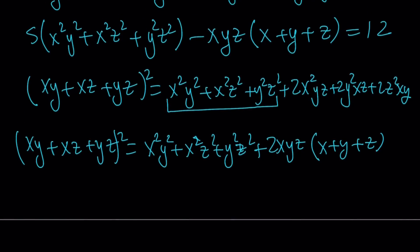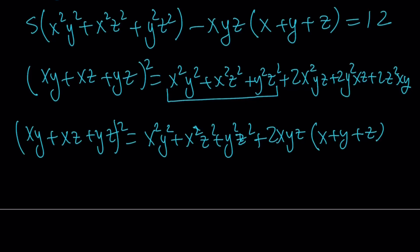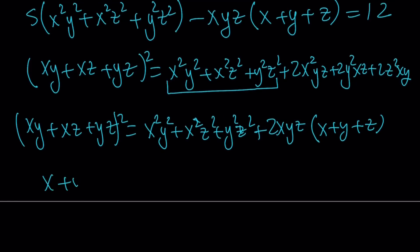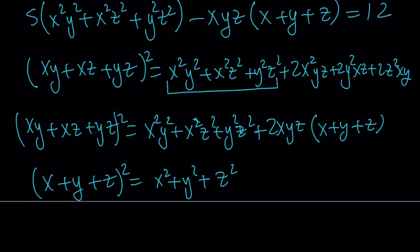We can make those replacements and put it all together. But from here I also need to find xy plus xz plus yz. So let's go ahead and square x plus y plus z now. That gives us x squared plus y squared plus z squared plus 2 times the quantity xy plus xz plus yz.